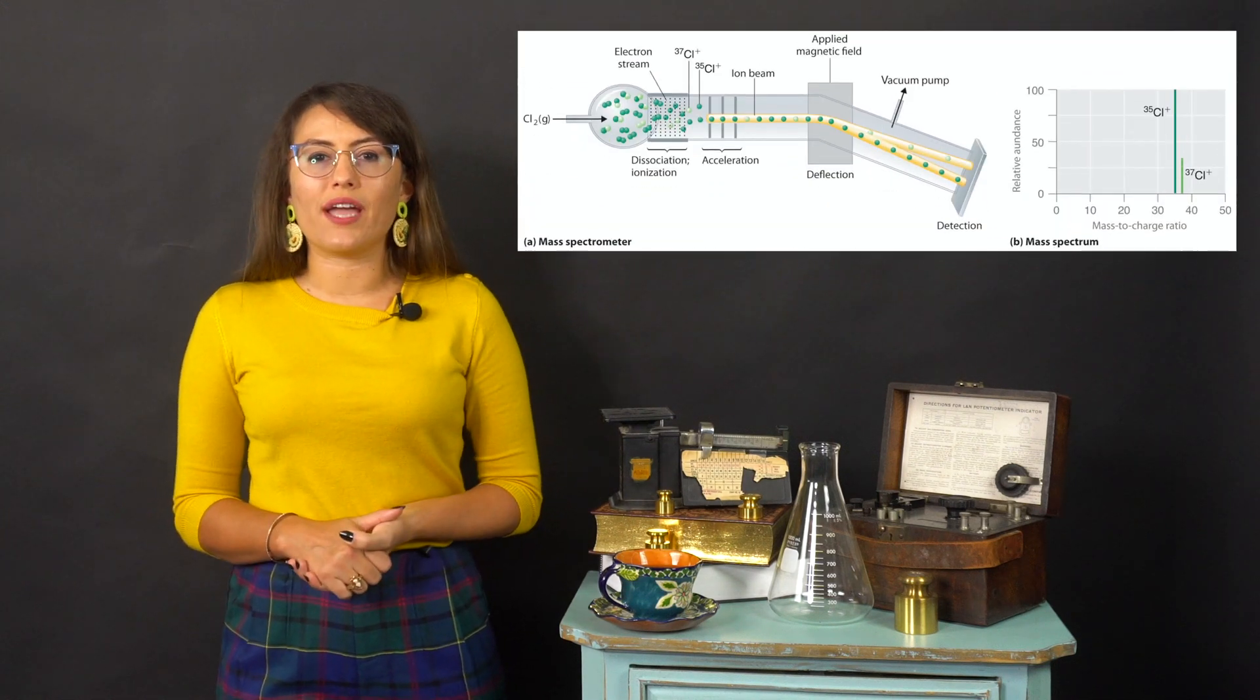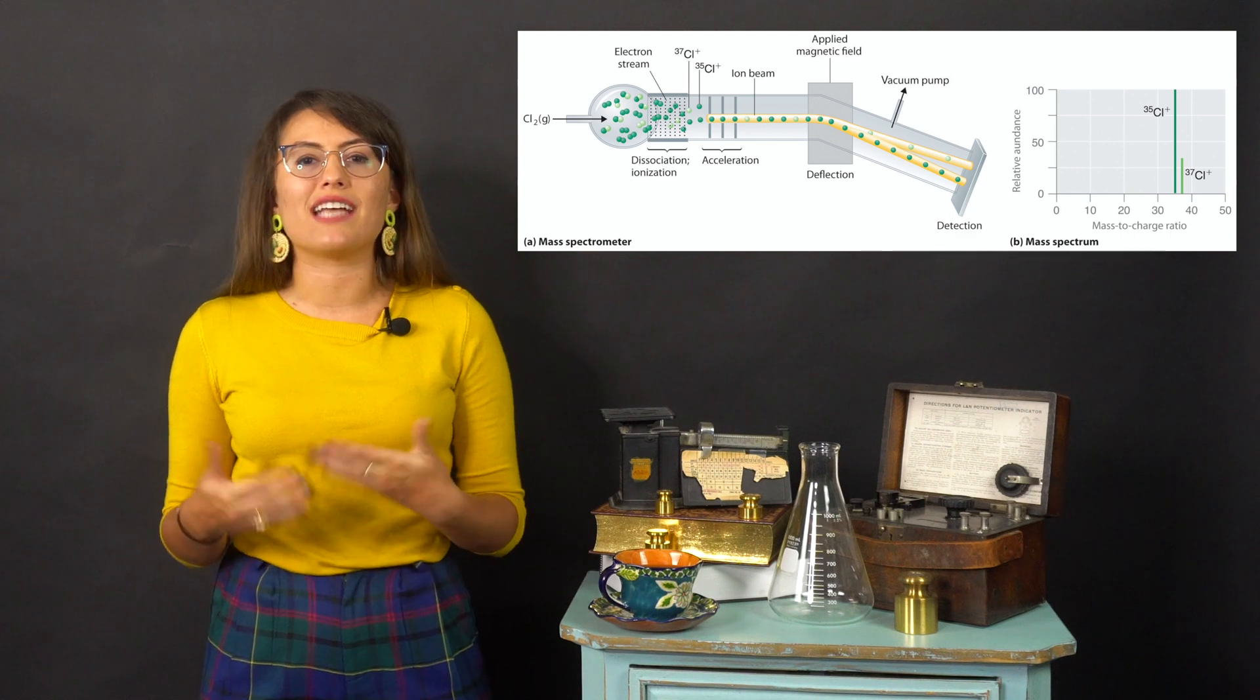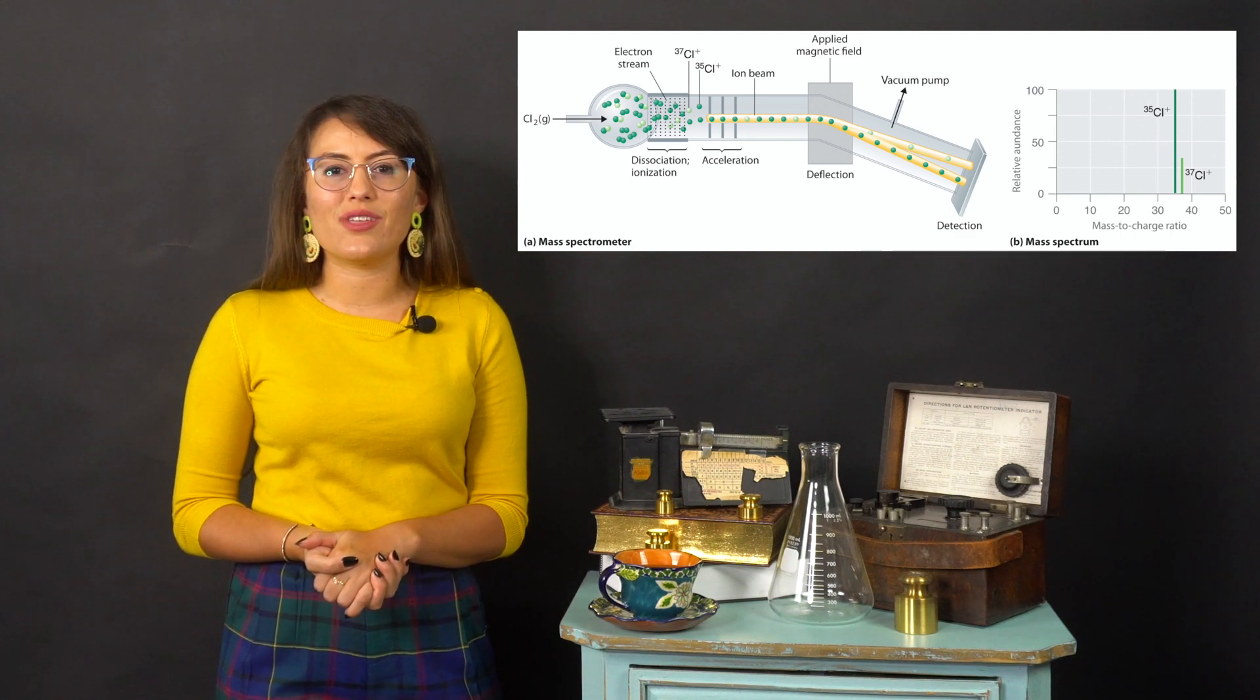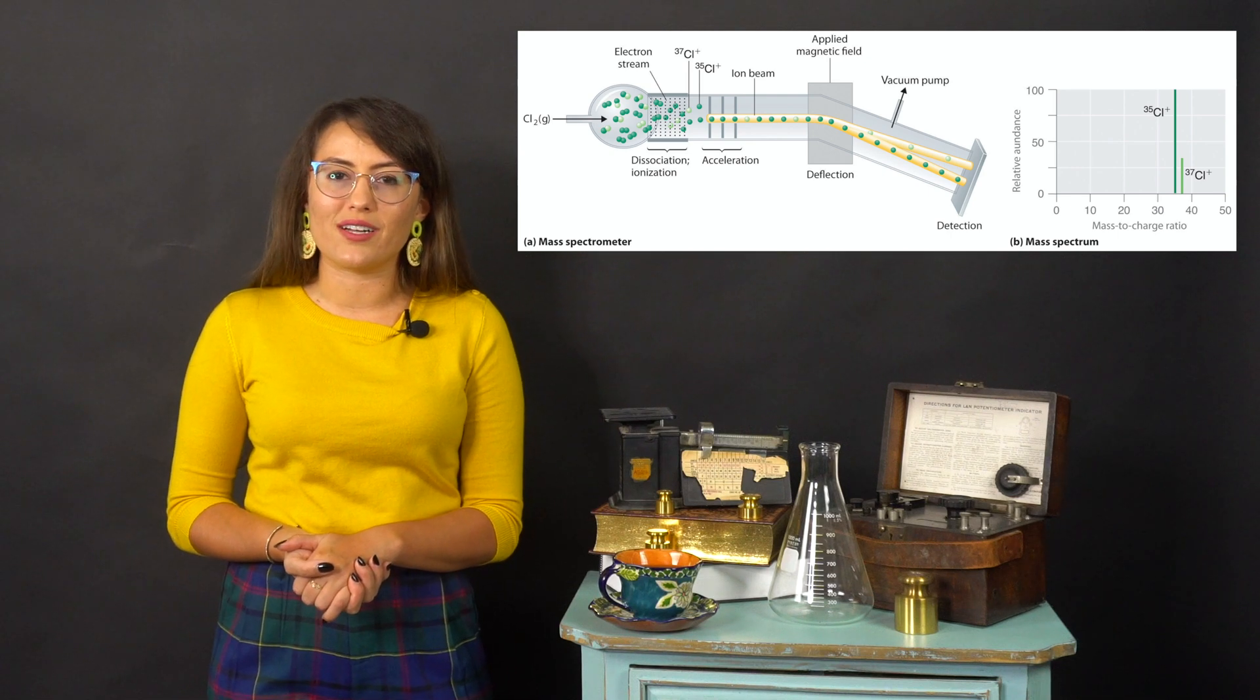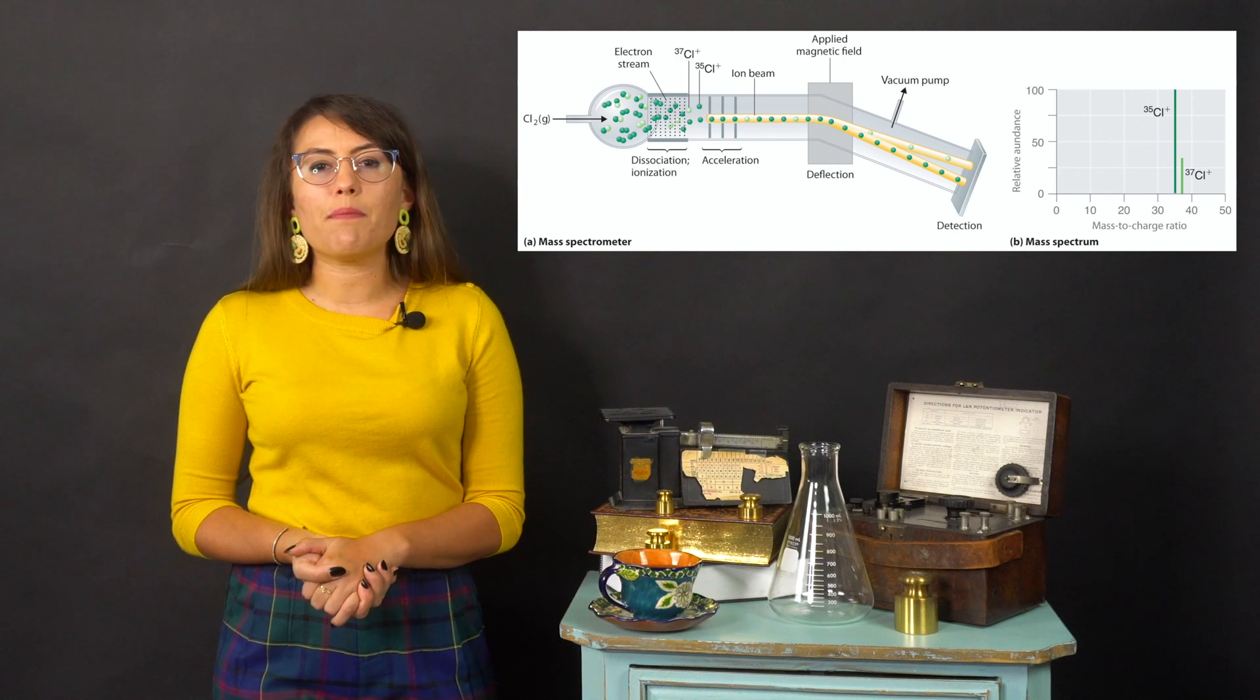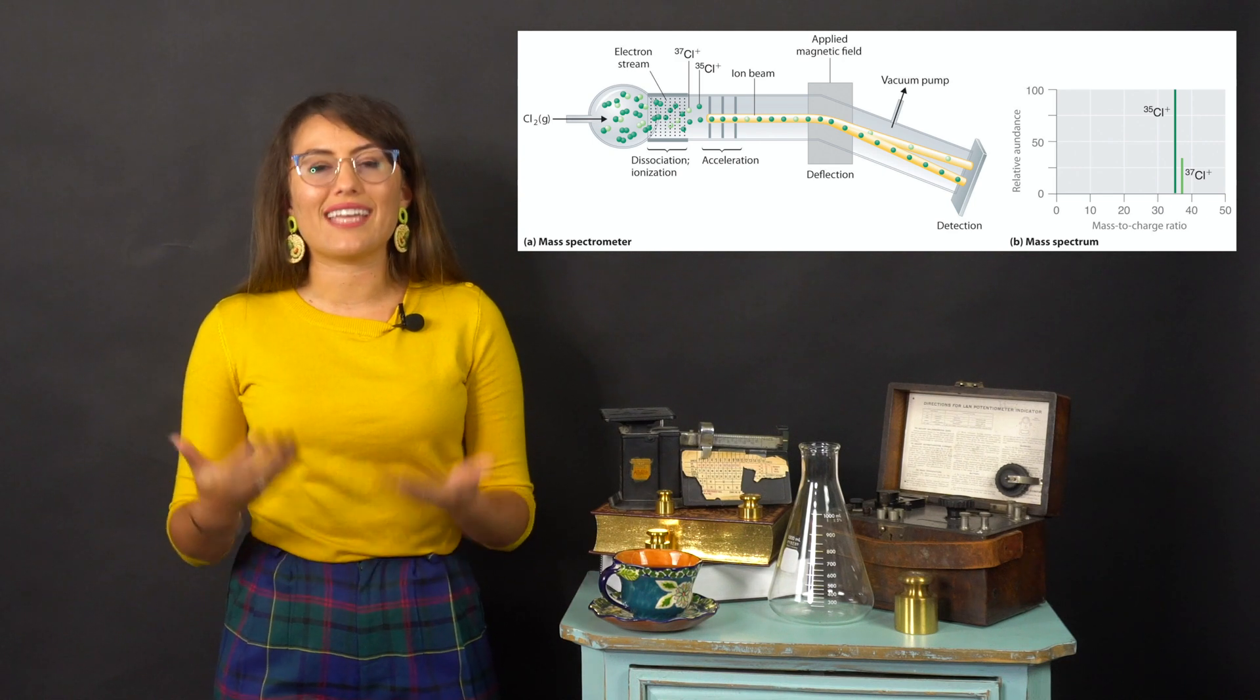Now, you must be wondering how we measure the atomic mass of an atom. Well, the most direct and accurate way is to use an instrument known as a mass spectrometer. When you introduce your sample in the gaseous state into the instrument, it is bombarded with electrons. The reason it is heavily bombarded is to dislodge any electrons to produce a positively charged species known as a cation.